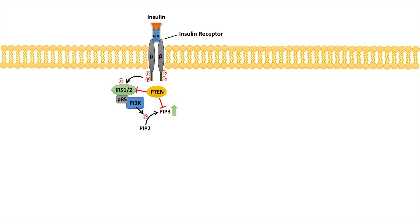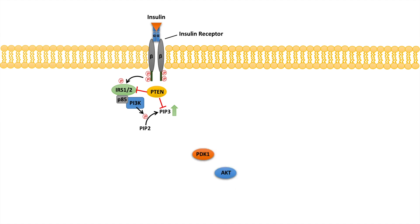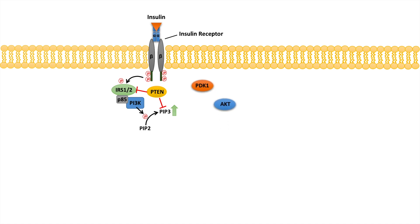If there is no PTEN around and PIP3 increases in concentration, it will recruit pyruvate dehydrogenase kinase one, or PDK1, and AKT toward the cell membrane.